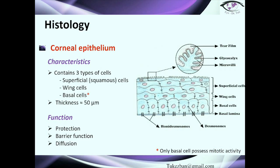The corneal epithelium contains three types of cells: superficial cells, wing cells, and basal cells. Its thickness is approximately 50 microns, though it varies between individuals — sometimes 40, sometimes 70 microns. The main function of this layer is protection, barrier function, and diffusion. In the slide you can also see hemidesmosomes and desmosomes. The difference is that desmosomes connect basal cells with each other, while hemidesmosomes connect basal cells with the basal lamina.